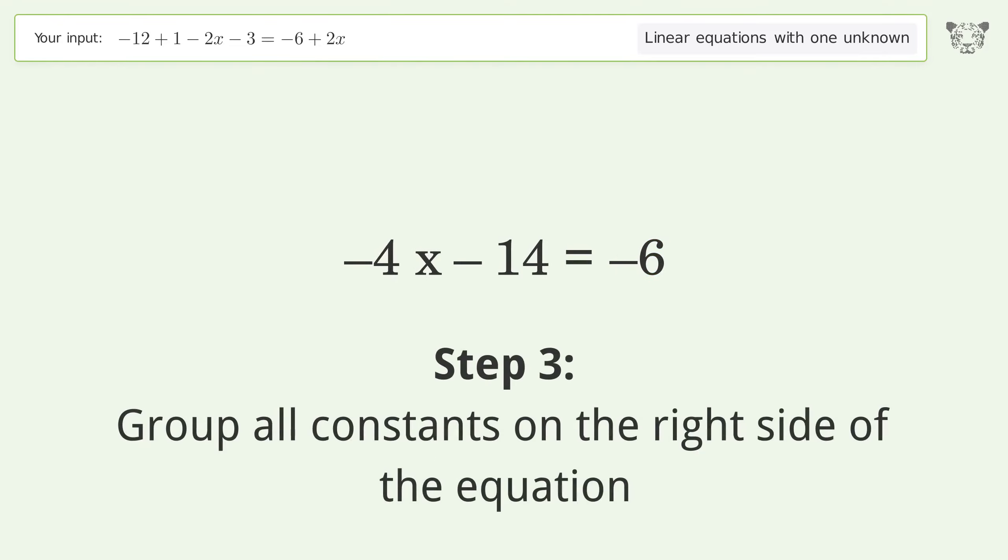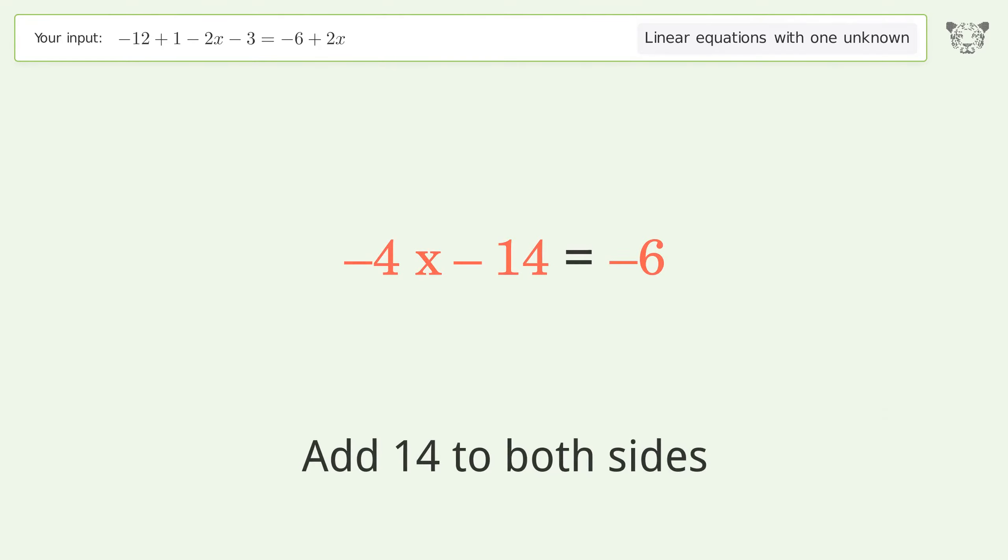Group all constants on the right side of the equation. Add 14 to both sides. Simplify the arithmetic.